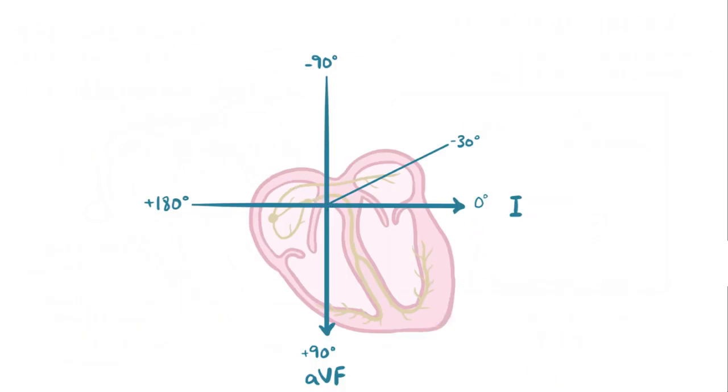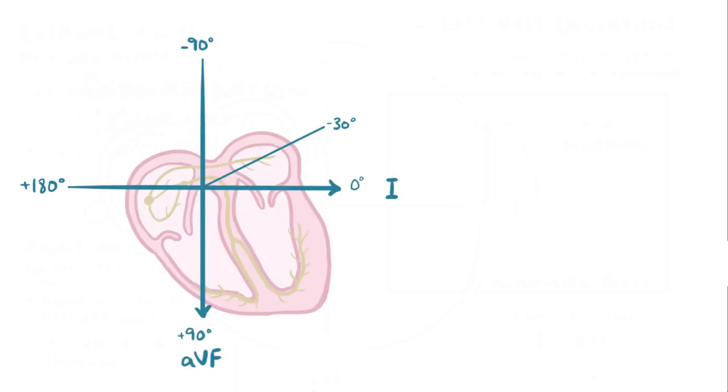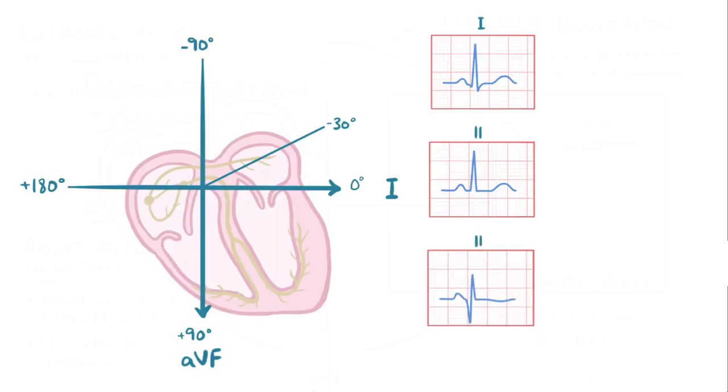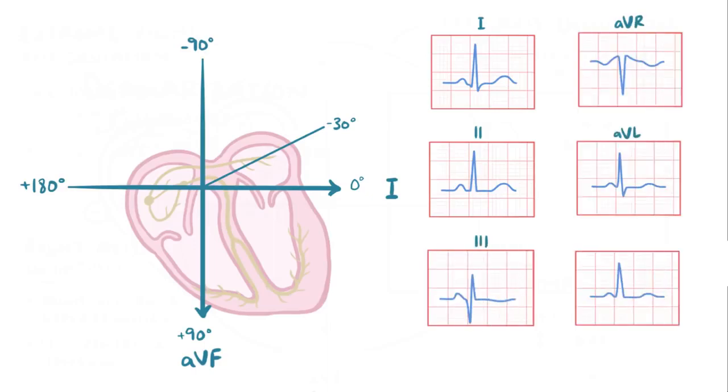Now you can figure out the QRS vector within about 30 degrees by looking at someone's ECGs, specifically the 6 leads 1, 2, 3, AVR, AVL, and AVF, corresponding to 0 degrees, plus 60 degrees, plus 120 degrees, minus 150 degrees, minus 30 degrees, and plus 90 degrees, respectively.